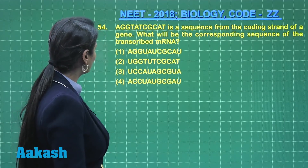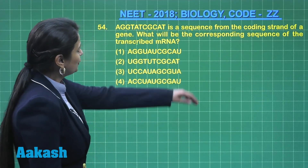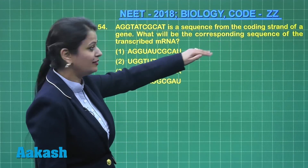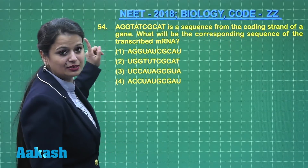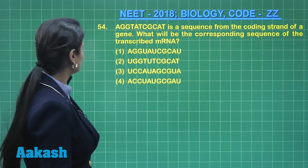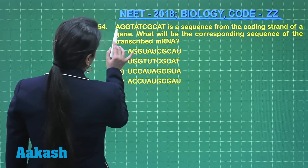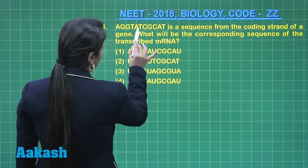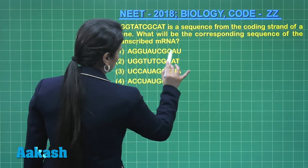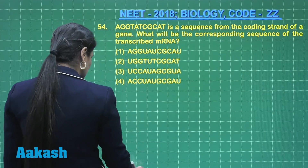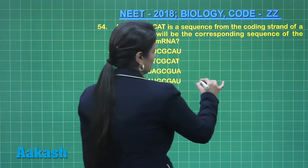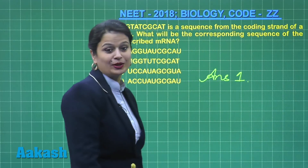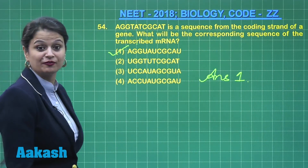Looking at the options: the sequence of the messenger RNA will be similar to the coding strand, but instead of thymine there will be uracil. So the sequence becomes AGGAGG — wherever thymine appeared, it is replaced by uracil. This means the right answer for this question is option number one. Now it's time to take up question number 55.